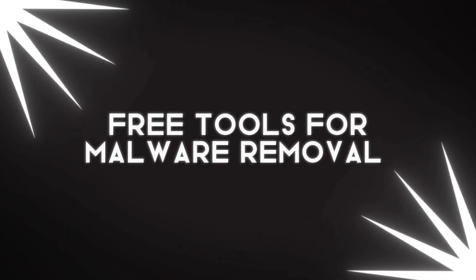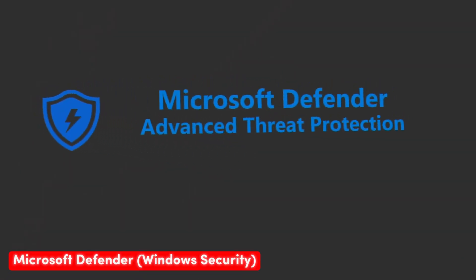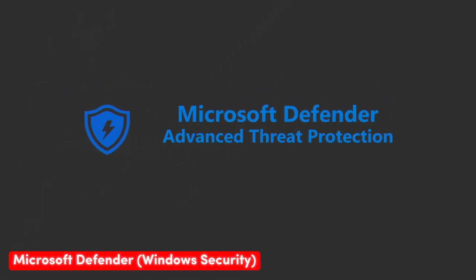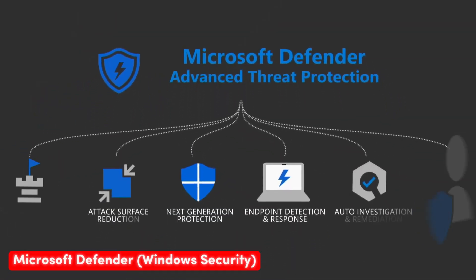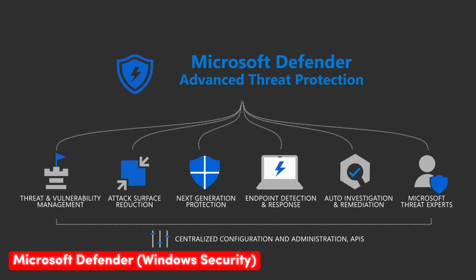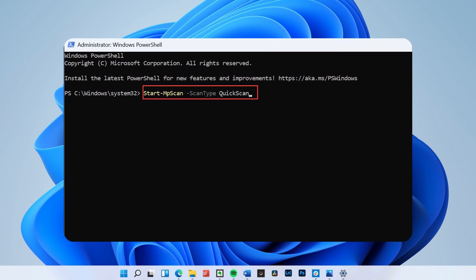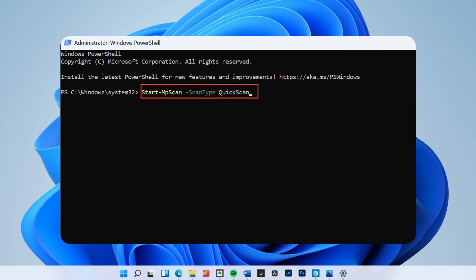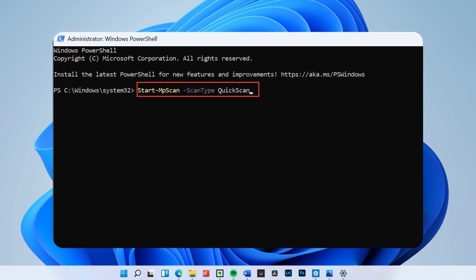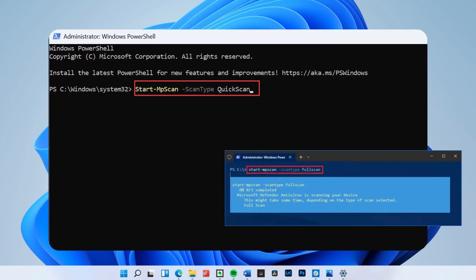Free tools for malware removal. Microsoft Defender — Windows Security: Modern Windows systems include Microsoft Defender, which provides robust protection against many threats. Run a quick scan from PowerShell Admin: Start-MpScan -ScanType QuickScan. Run a full scan: Start-MpScan -ScanType FullScan.